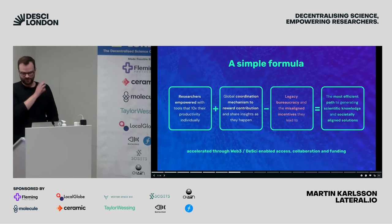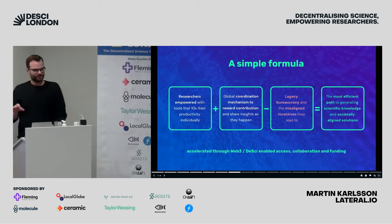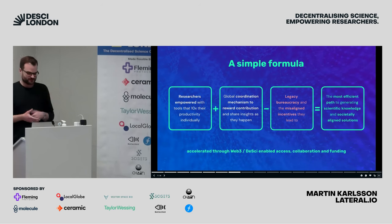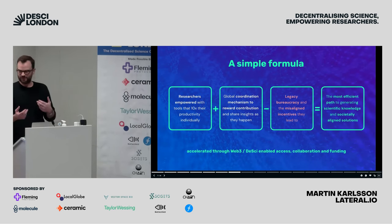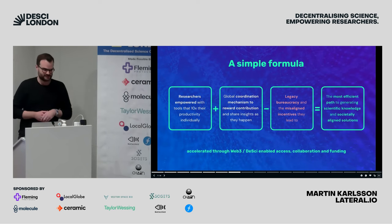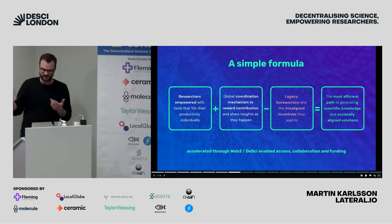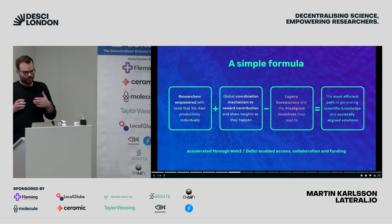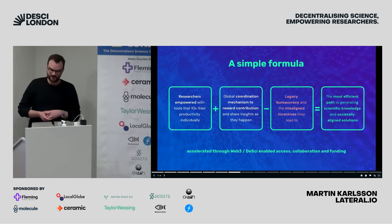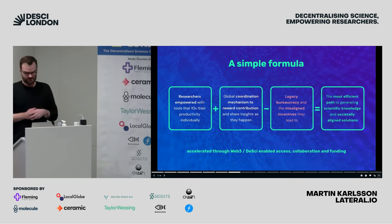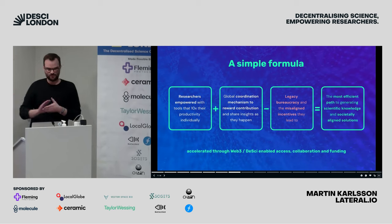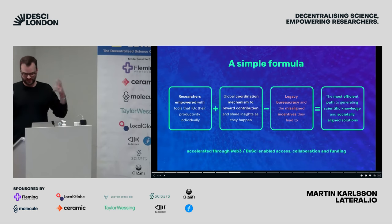Josh also mentioned this — what's really great about this community is that in a time where a lot can feel quite dark, here you have a very optimistic crew. And I think the other fun thing about DeSci is that it's a community of scientists, so there's a lot of skepticism at its core. People really need to be quite rigorous in their approaches, and I think that's what's going to contribute to the success of this community. The formula we're working towards is: empower researchers with tools that 10x-plus their productivity, add a global coordination mechanism that can reward contribution and share insights as they happen, and remove legacy bureaucracy and misaligned incentives, to give us the most efficient way to coordinate society.